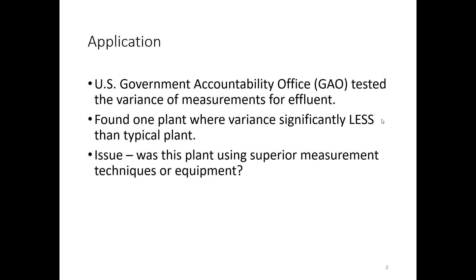The Treasury Board in the Canadian federal government operates very similarly. So the GAO found this plant where they're measuring the effluent. Effluent is basically pollution that goes into the water — emissions is pollution that goes into the air. They're taking measurements to make sure there are no exceedances, that it doesn't go above certain thresholds. They're looking at the variance of measurements from this one plant, and the variance is much less than other plants.